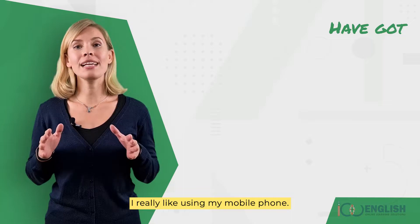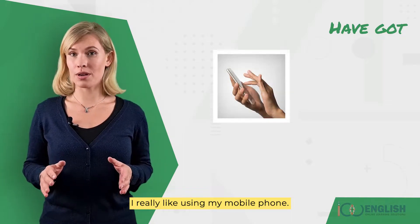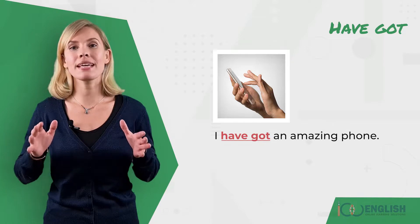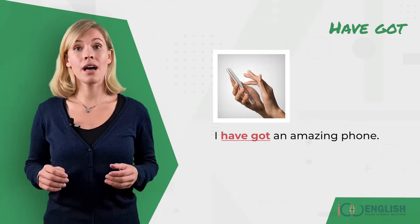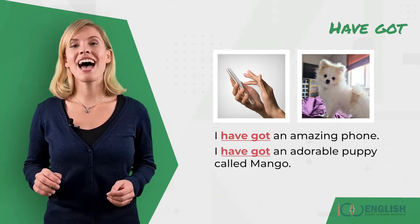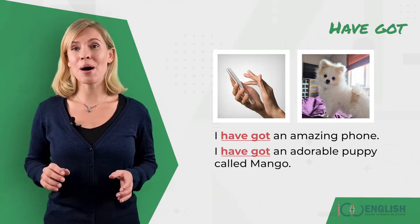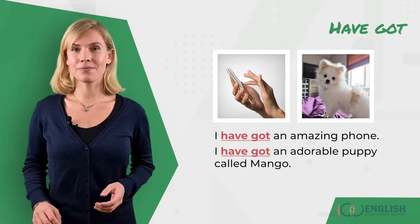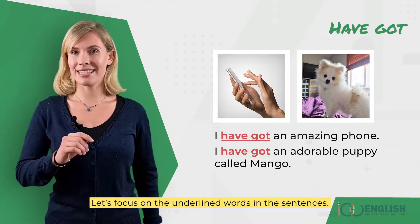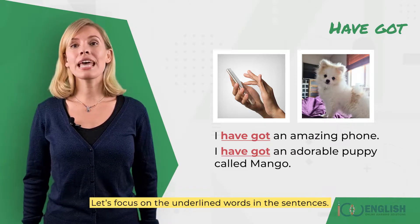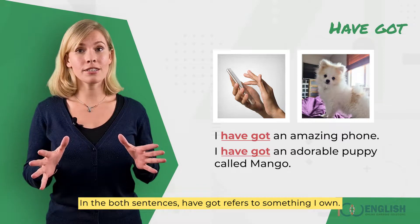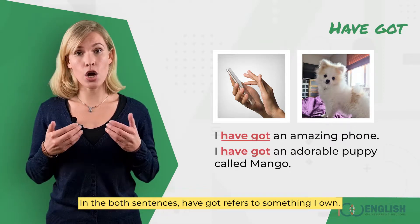I really like using my mobile phone. I have got an amazing phone. I love dogs. I have got an adorable puppy called Mango. Let's focus on the underlined words in the sentences. In both sentences, have got refers to something I own.